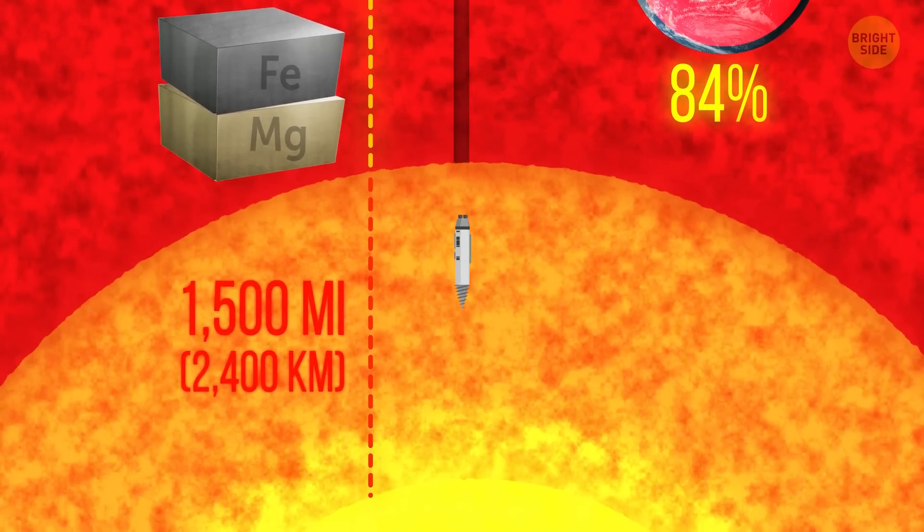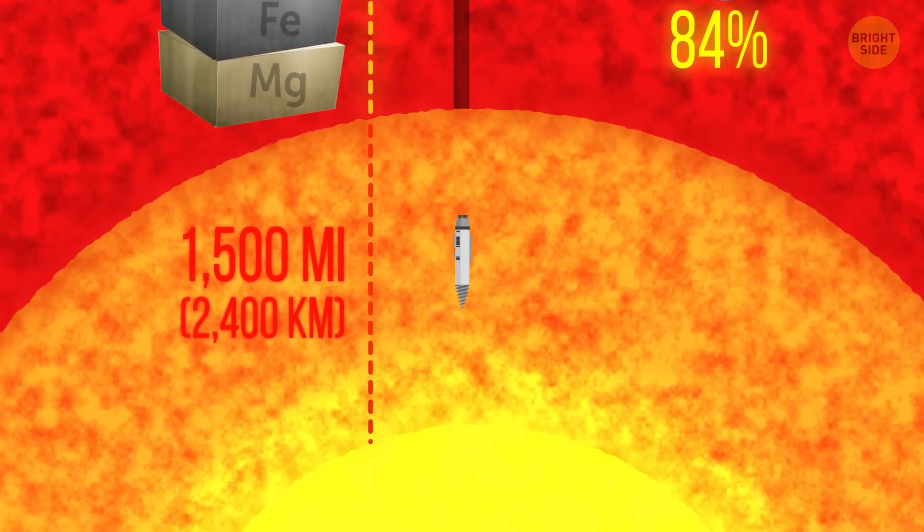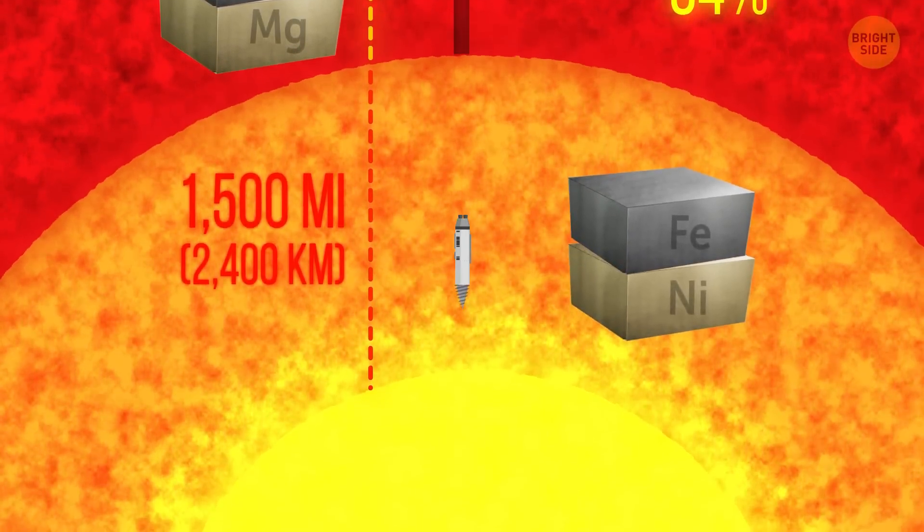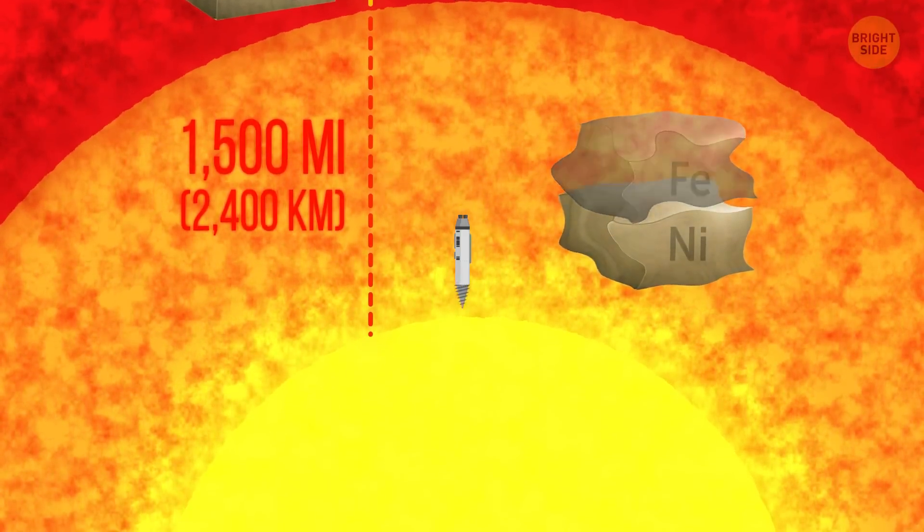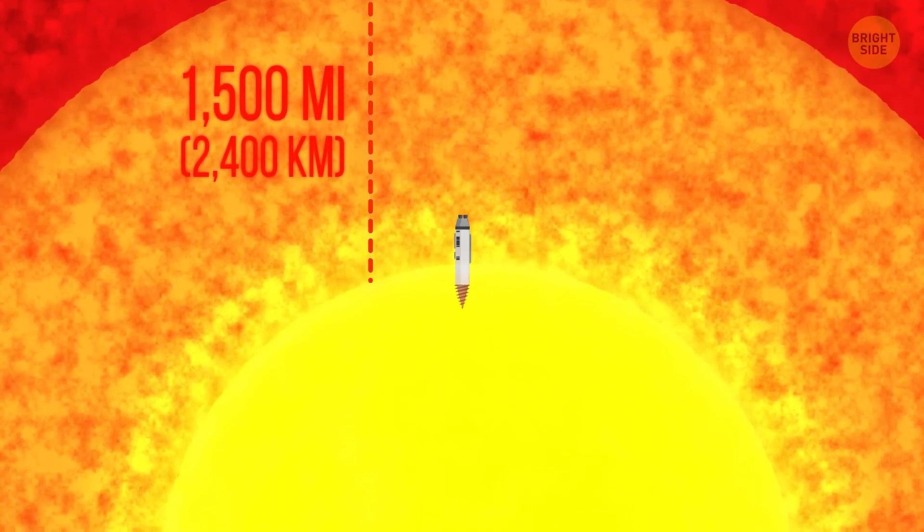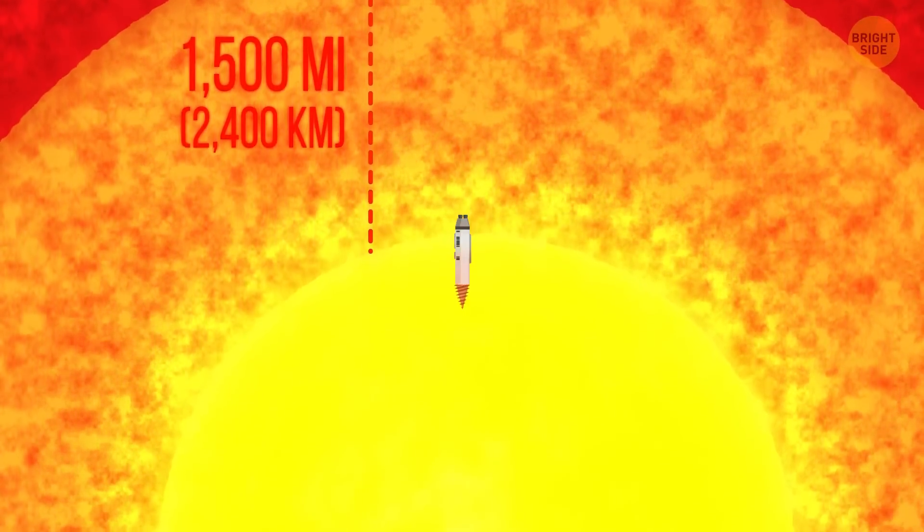The 1,500-mile-thick outer core is liquid. It consists of iron and nickel, but the pressure isn't high enough for it to be solid. You pass through the boundary between the outer and inner core.